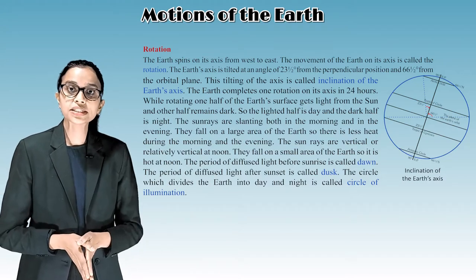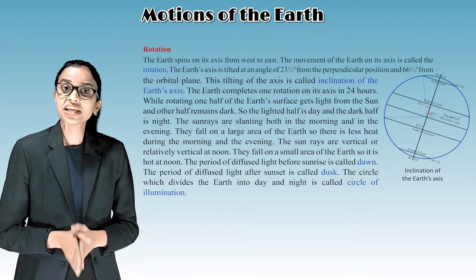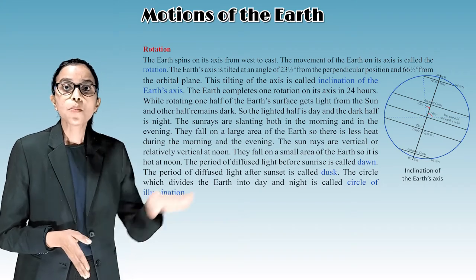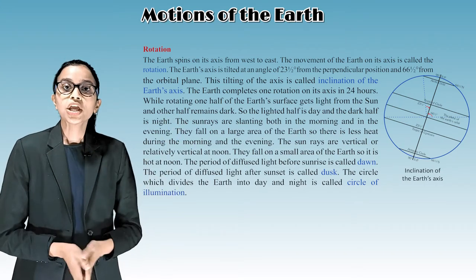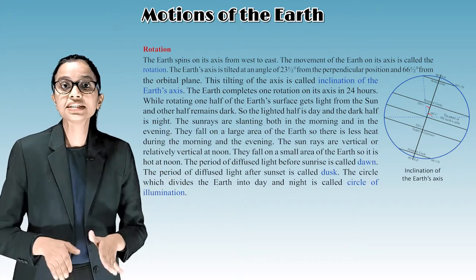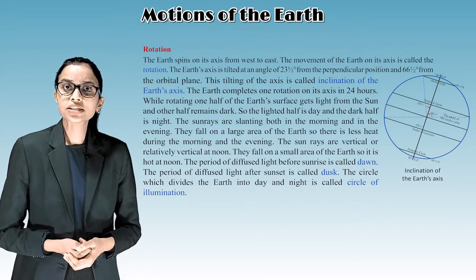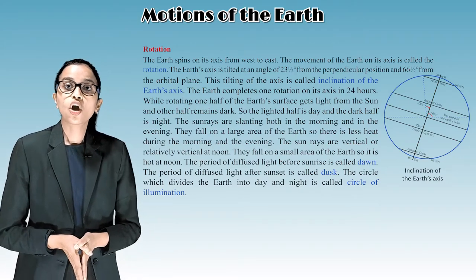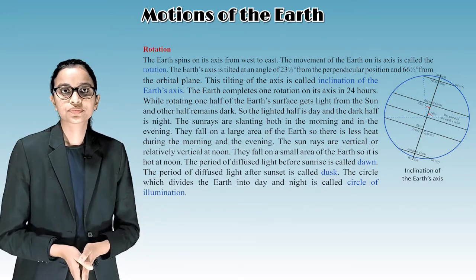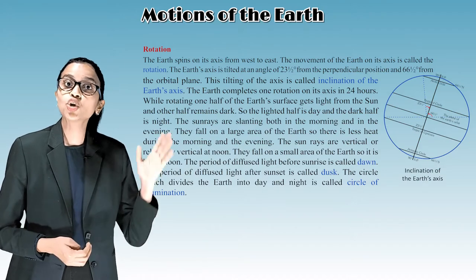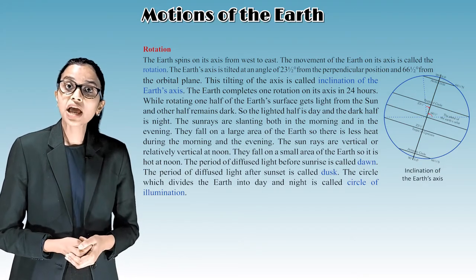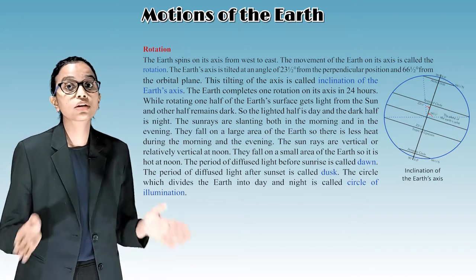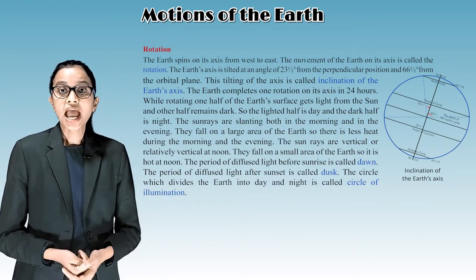While rotating, one half of the earth's surface gets light from the sun and the other half remains dark — the lighted half is day and the dark half is night. The sun rays are slanting both in the morning and in the evening, falling on a large area, so there is less heat. The sun rays are vertical at noon, falling on a small area, so it is hot at noon. The period of diffused light before sunrise is called dawn, and after sunset is called dusk. The circle which divides the earth into day and night is called the circle of illumination.